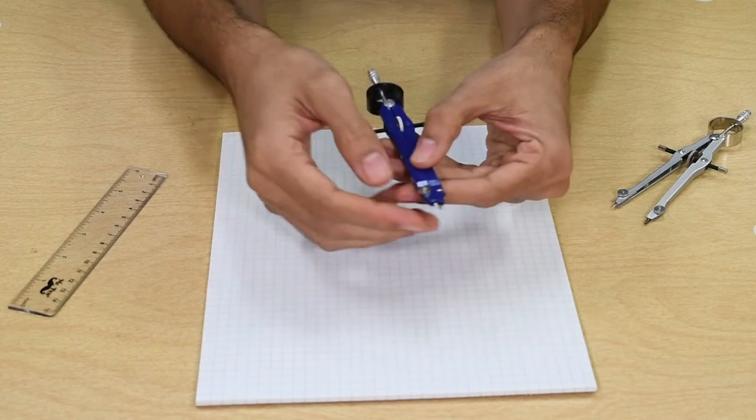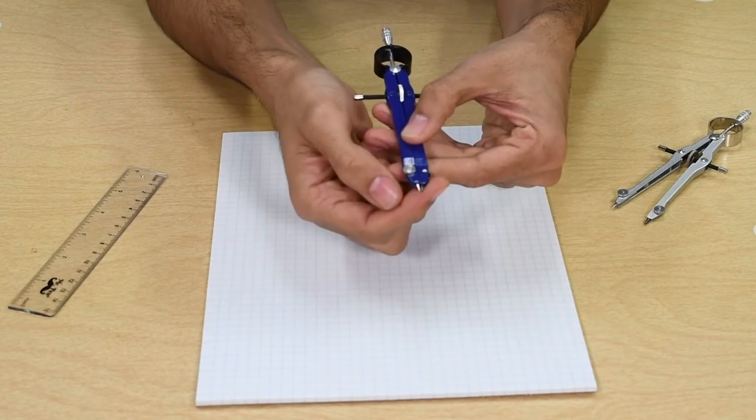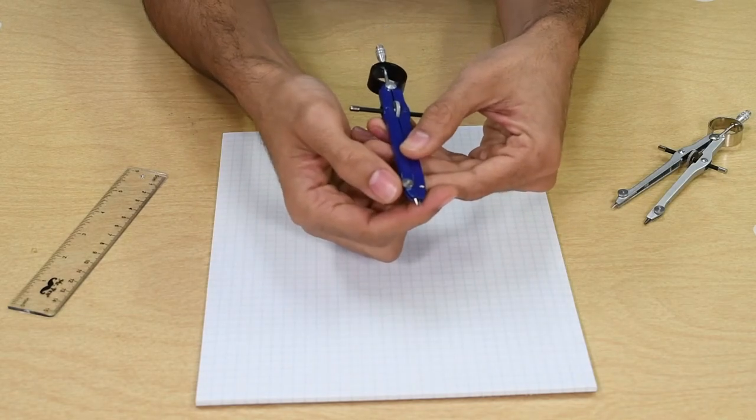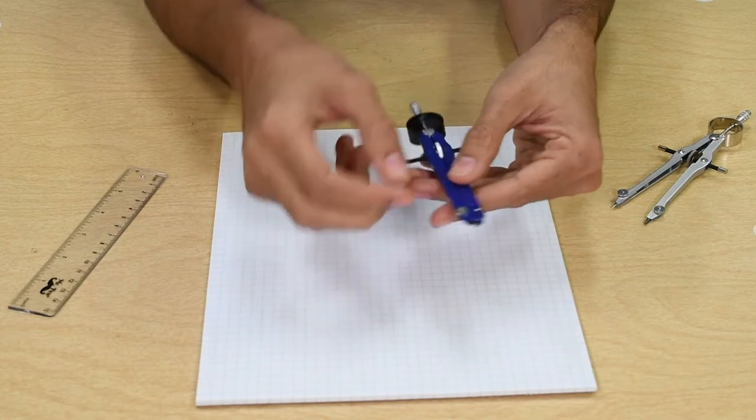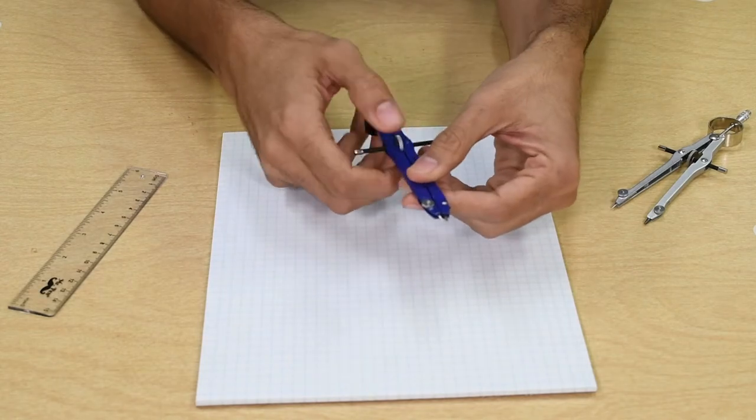First, you need to make sure that the lead is level with the pointer side of the compass for accuracy. Then set the distance between the legs to your desired radius by using the center wheel.